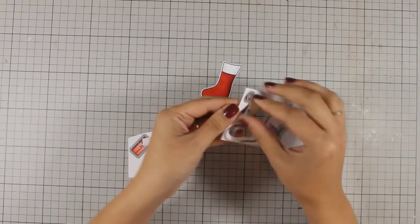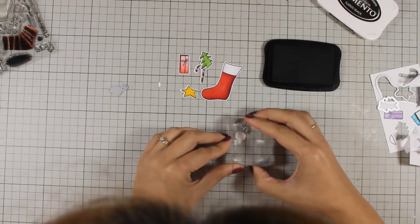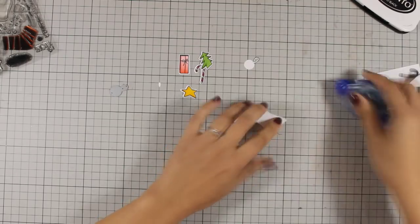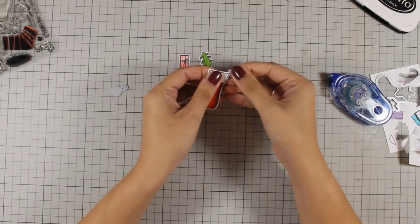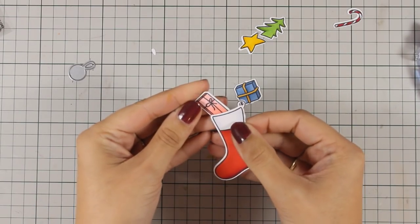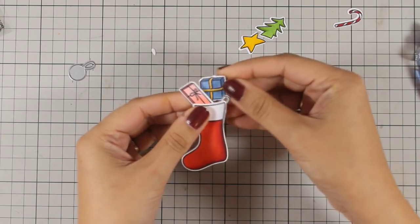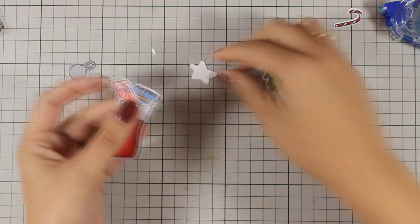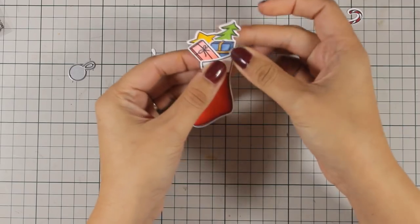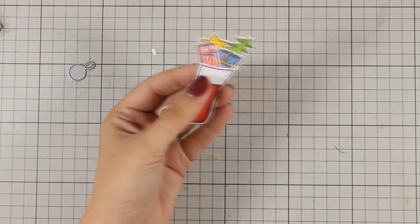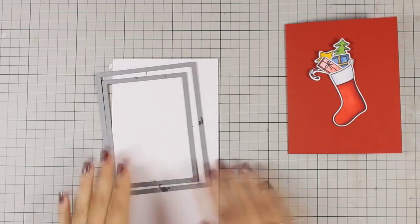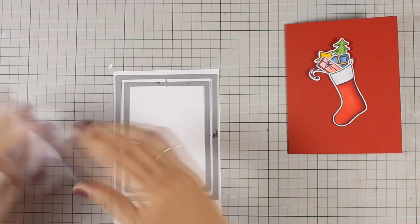I have also cut out with one of the dies a loop for the stocking, which I am now going to stamp. And now it's time to add all those stocking stuffers inside the stocking. I will be using my tape runner to assemble everything. And all you have to do now is to stick the stocking on top of your card base and you have a card ready. All you have to do is add the sentiment.